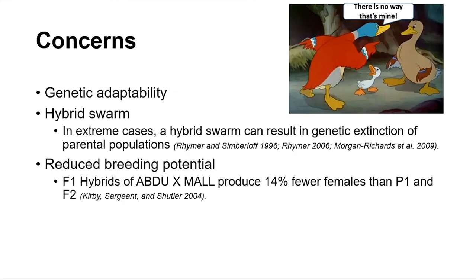Concerns with hybridization — specifically with game farm mallards — include reduced genetic adaptability for American black ducks, since game farm mallards have much lower genetic diversity from years of line breeding. We're also concerned about the risk of a hybrid swarm as occurred with the Hawaiian duck. Additionally, a 2004 study found that hybrids produce about 14 percent fewer females, meaning fewer birds that can breed and add to the population.